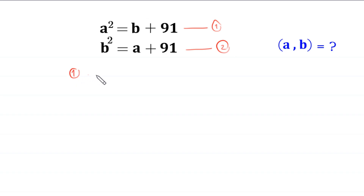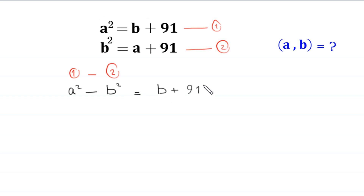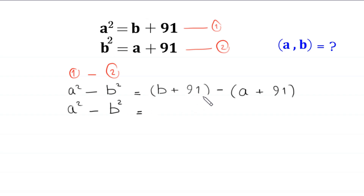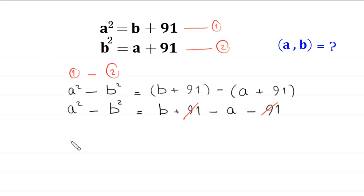From equation 1, we subtract equation 2. This will become a squared minus b squared is equal to b plus 91 minus (a plus 91). We remove the brackets, so this becomes b plus 91 minus a minus 91. The negative 91 and positive 91 cancel, giving us a squared minus b squared is equal to b minus a.